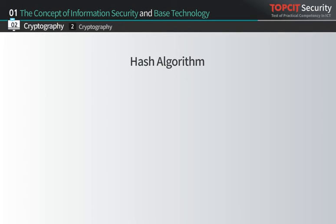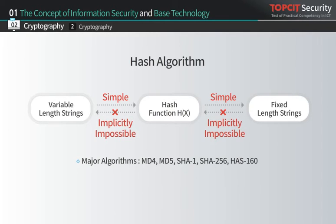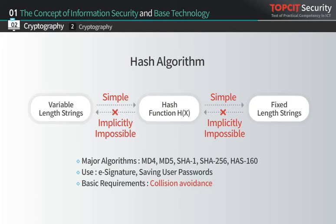Hash algorithms convert variable length strings into fixed length strings, which is why they are also called one-way cryptographic algorithms. Some examples are MD4, MD5, SHA-1, SHA-256, which are commonly used nowadays, and HAS-160, developed in Korea. This algorithm is mainly used for electronic signatures or when saving user passwords in the database. When different strings convert into identical strings, this is called hash collision, and attacks can occur using this collision. Therefore, collision avoidance is one of the basic requirements for hash algorithms.